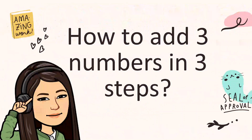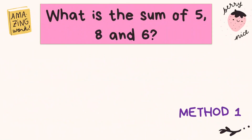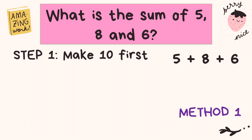What about how to add three numbers in three steps? Let's find out. Let's say this is the question: What is the sum of five, eight, and six? I will be showing you Method One first. The first step is to make ten first. Now let's look at these addends and try to break down one of the addends using number bonds, and then add it to five. Let's say eight — eight has five and three, right? We can combine five and three, that is equal to eight.